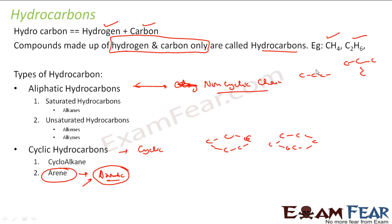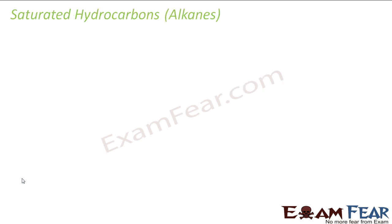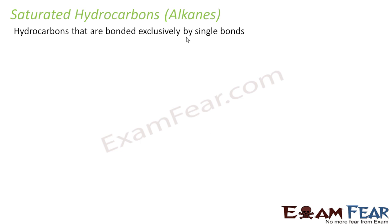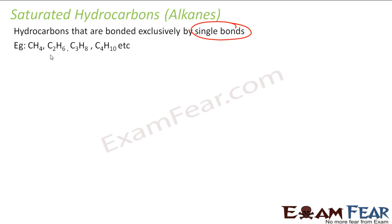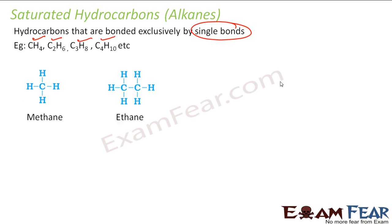Just understand that we have aliphatic, with non-cyclic long chains — saturated and unsaturated. For saturated I have alkanes; for unsaturated I have alkenes and alkynes. Cyclic hydrocarbons include cycloalkanes (saturated) and arenes (unsaturated). So let us start with the saturated alkanes. These hydrocarbons are bonded exclusively by single bonds — there is no double bond. For example, CH4, C2H6, C3H8, C4H10. All carbon-carbon and carbon-hydrogen bonds are single bonds.